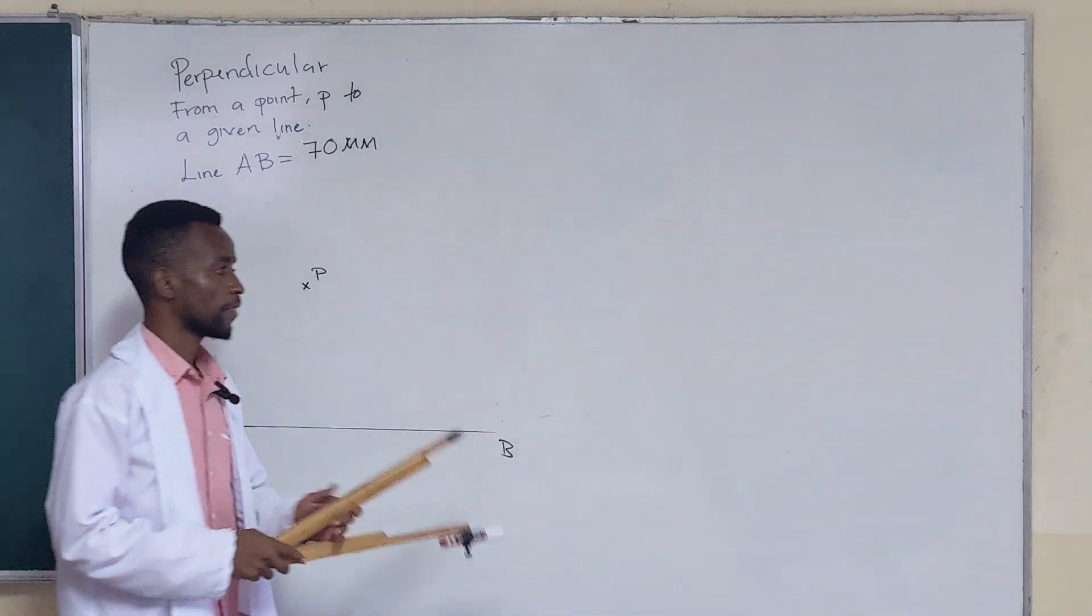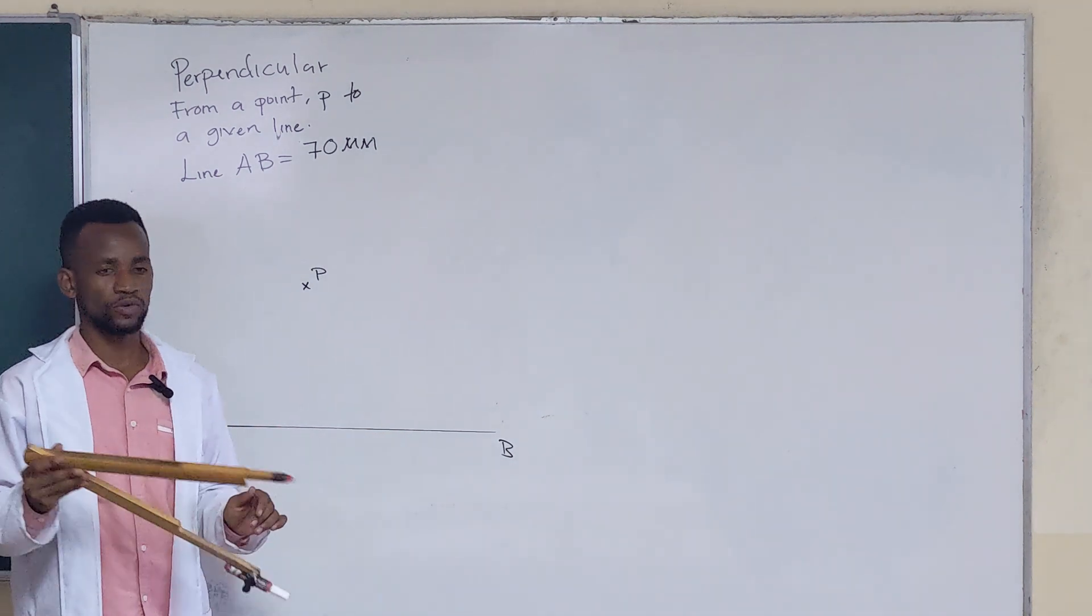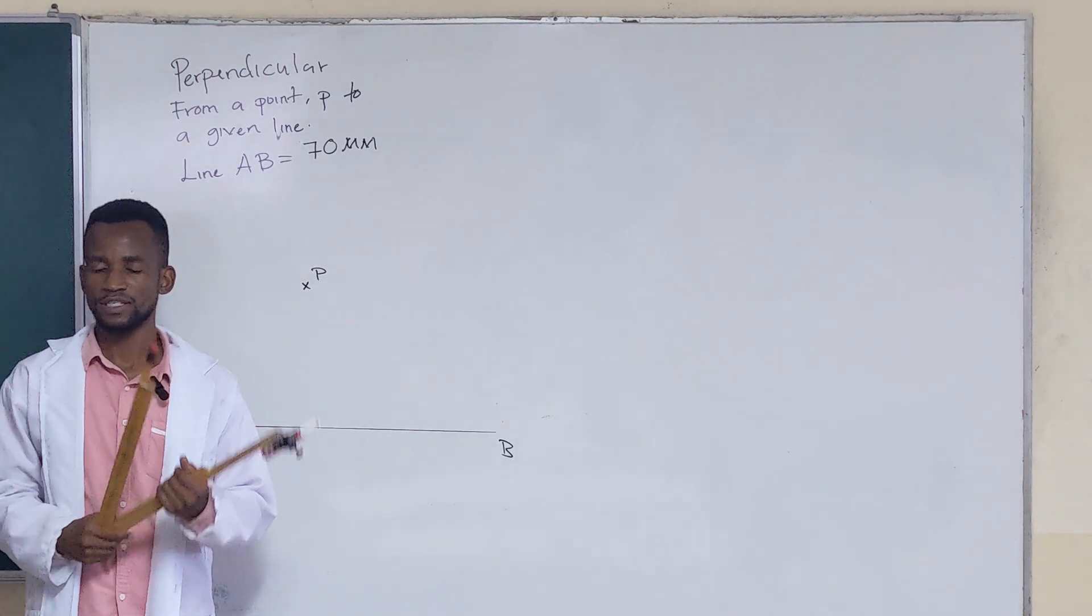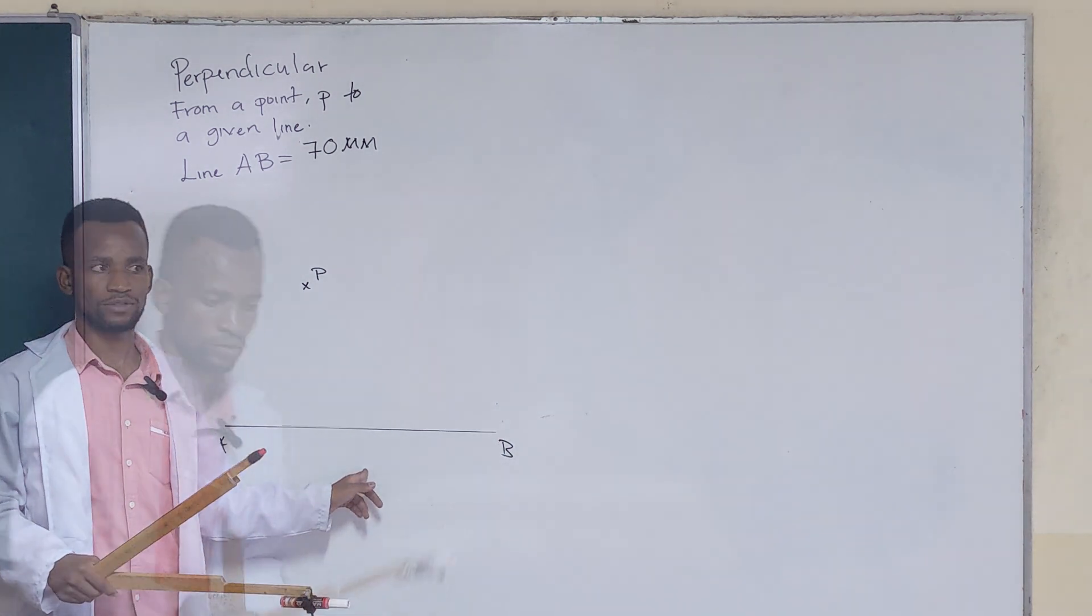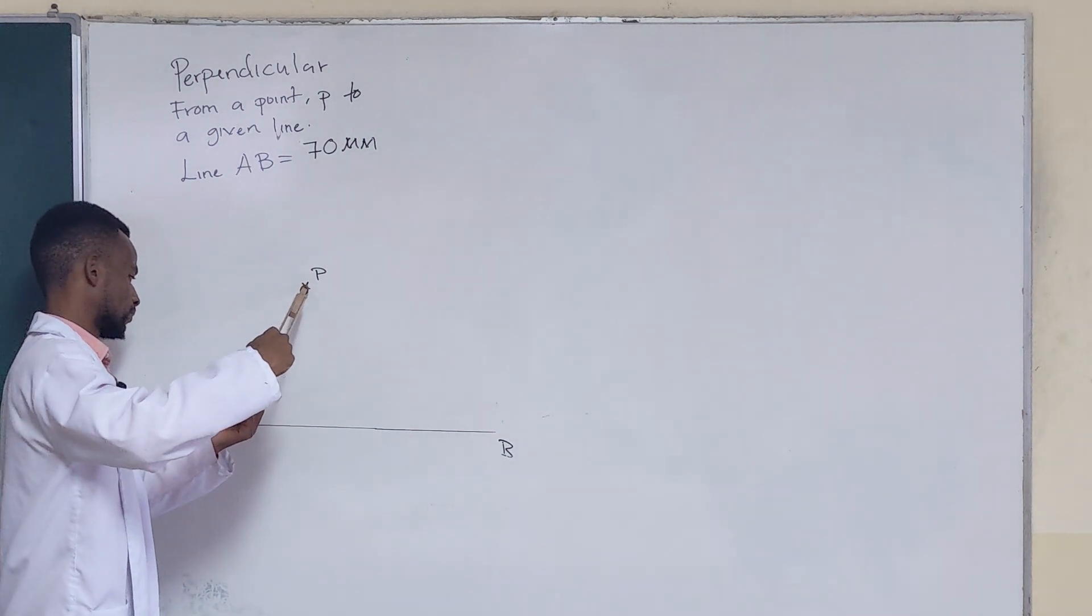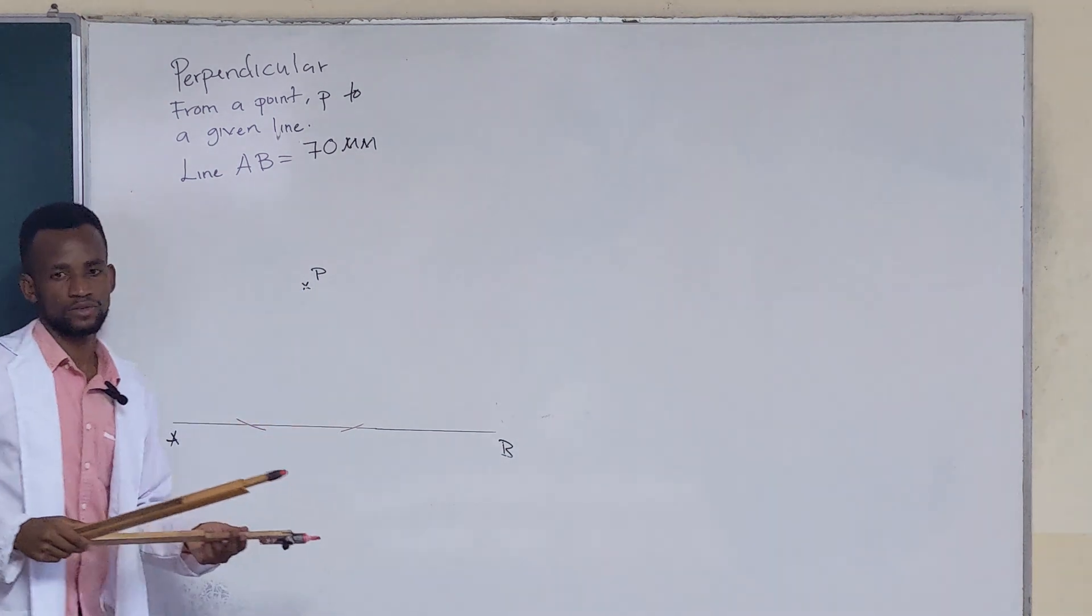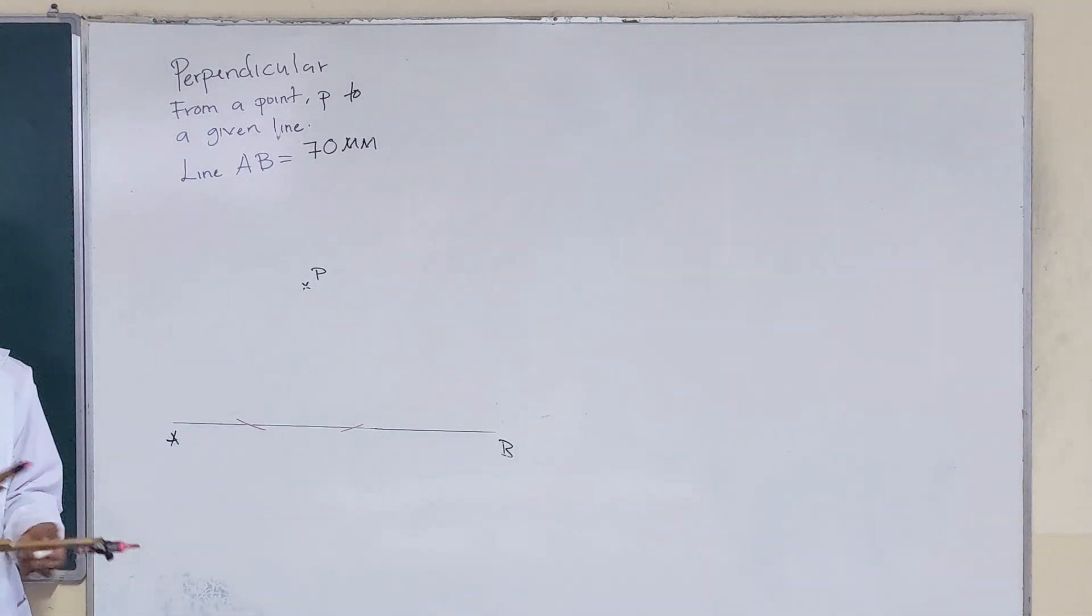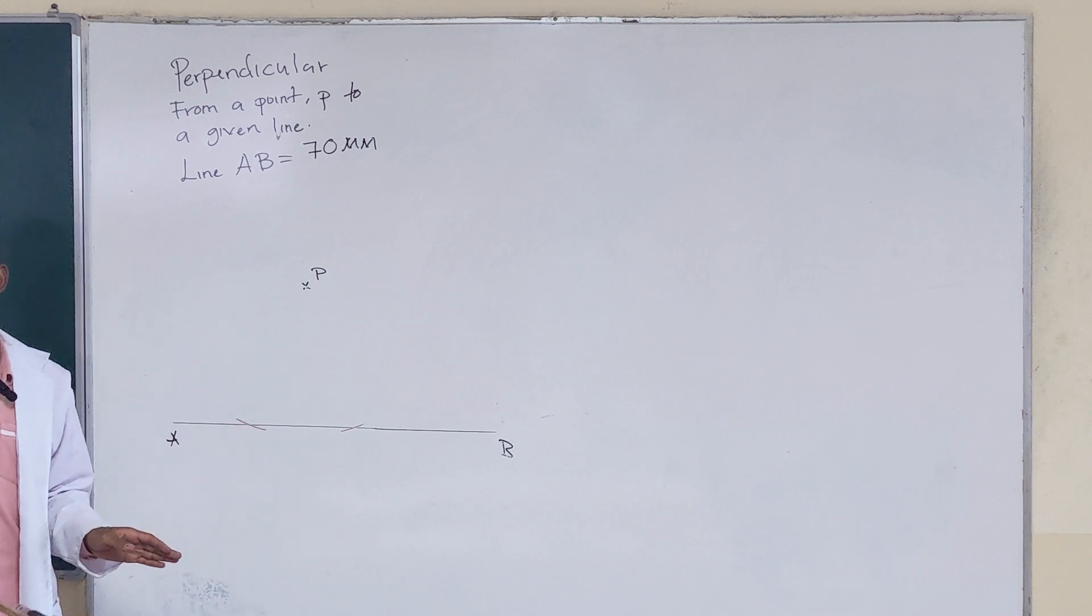For this one, you get your compass, you place it at point P, open it to any convenient radius such that it will be able to cut this line at any two points. So you place your compass at point P, strike an arc like that. This radius is just any convenient radius.